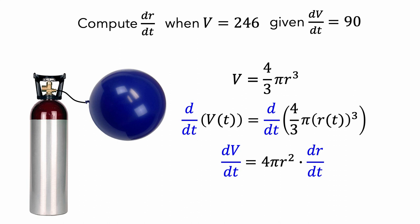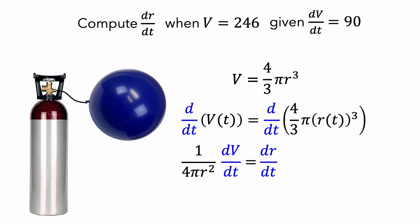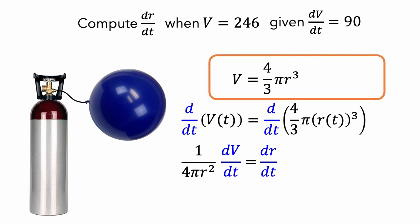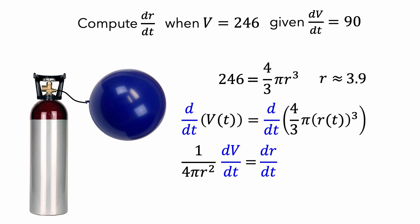Since our goal is to compute dr/dt, we can divide both sides of the equation by 4 pi r squared. Now we have a formula for dr/dt that involves dv/dt, which we know is equal to 90, and r. We can use our formula that relates volume and radius to find the radius when the balloon has a volume of 246 cubic inches. Plugging in 246 for v, we get that r is approximately 3.9 inches.